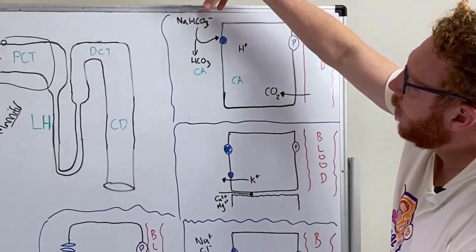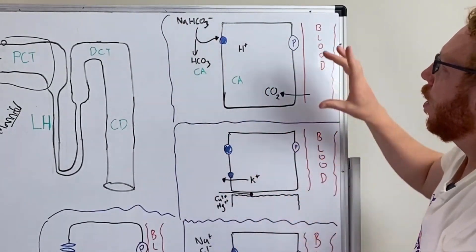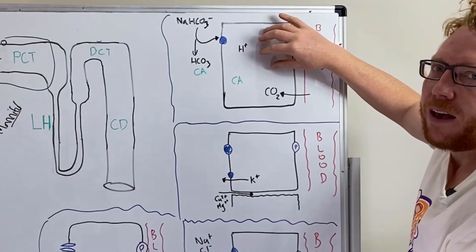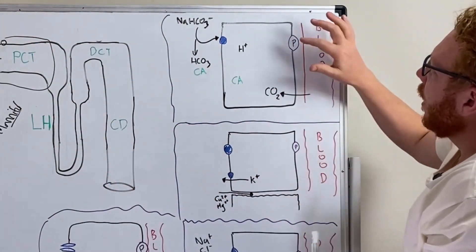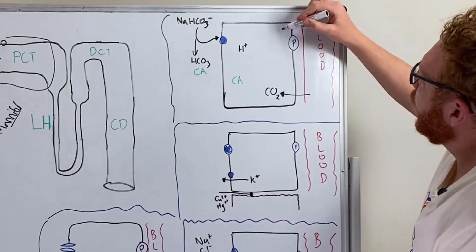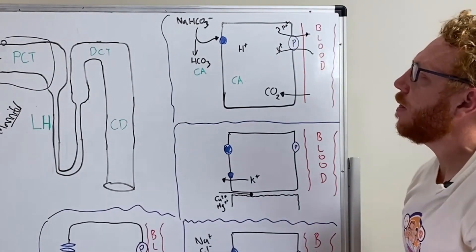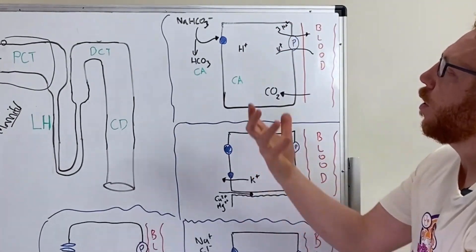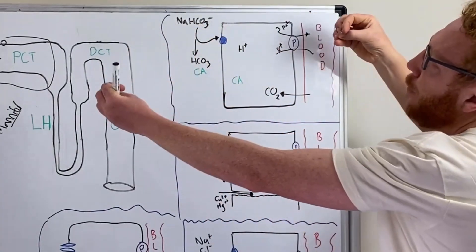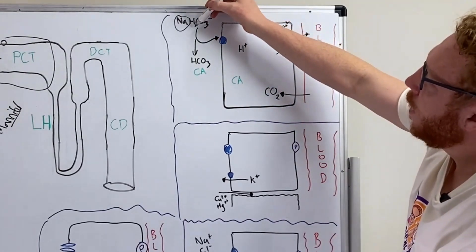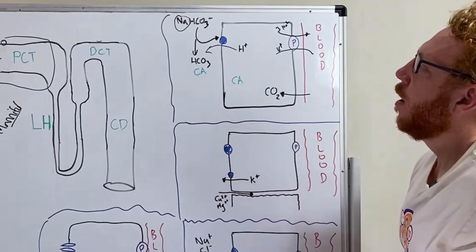Sodium will come through in the filtrate along the tubule in the form of sodium bicarbonate. To create an environment where there are low amounts of sodium in the cell, at the back of the cell near the blood is a pump called a sodium-potassium pump. This pump will pump out three sodium in exchange for potassium, which makes the inside of the cell very low in sodium. So there's a strong gradient to pull sodium in. When sodium comes along in the form of sodium bicarbonate, they separate into sodium and bicarbonate. Sodium will come into the cell through a transporter with an exchange of hydrogen — hydrogen goes out, sodium comes in.